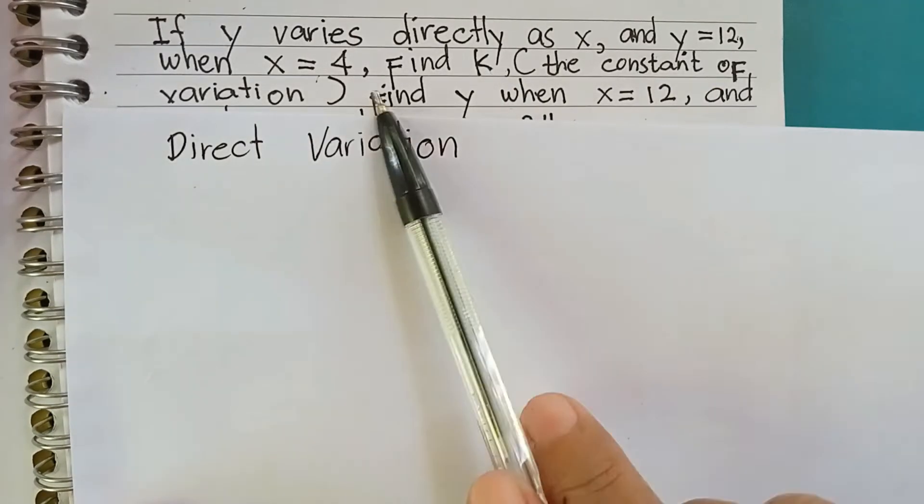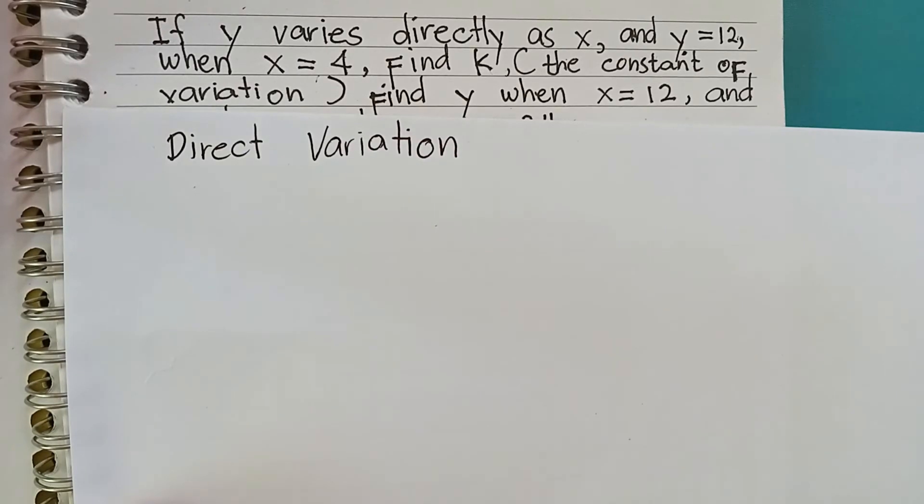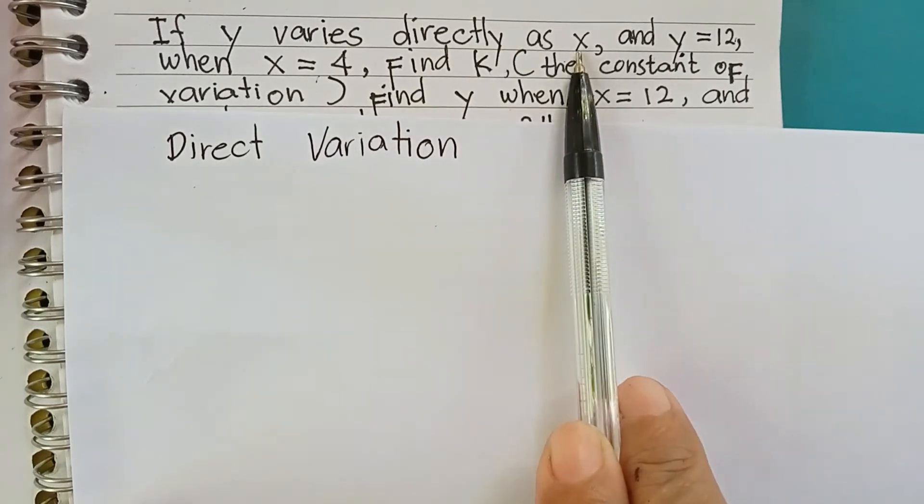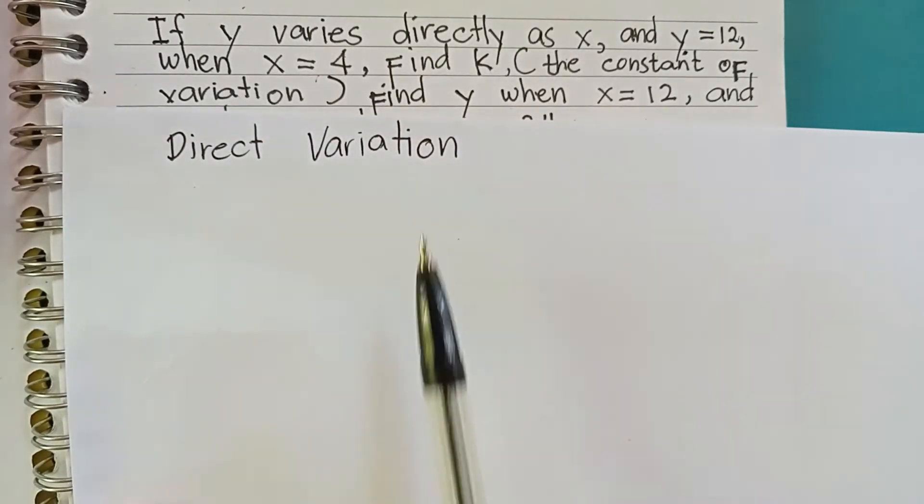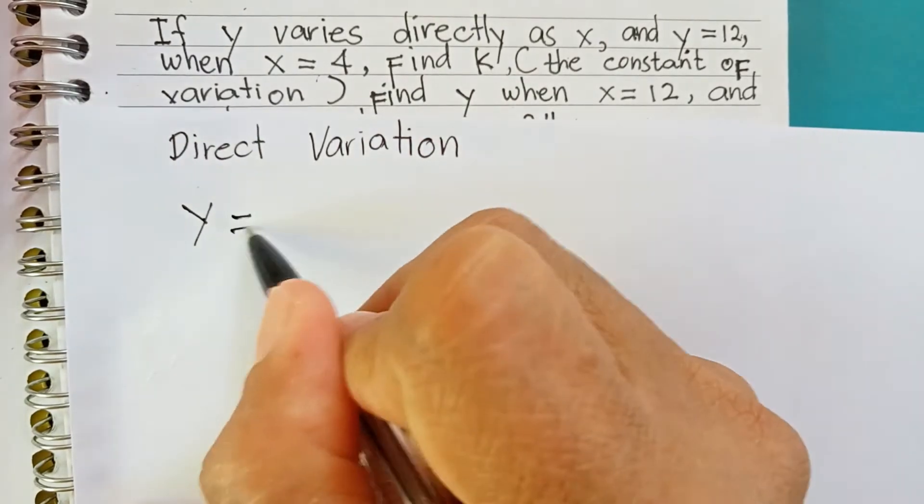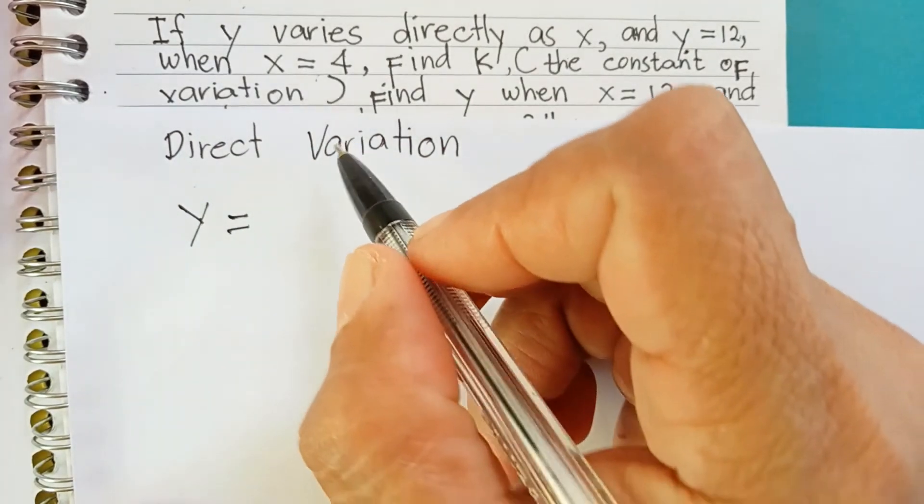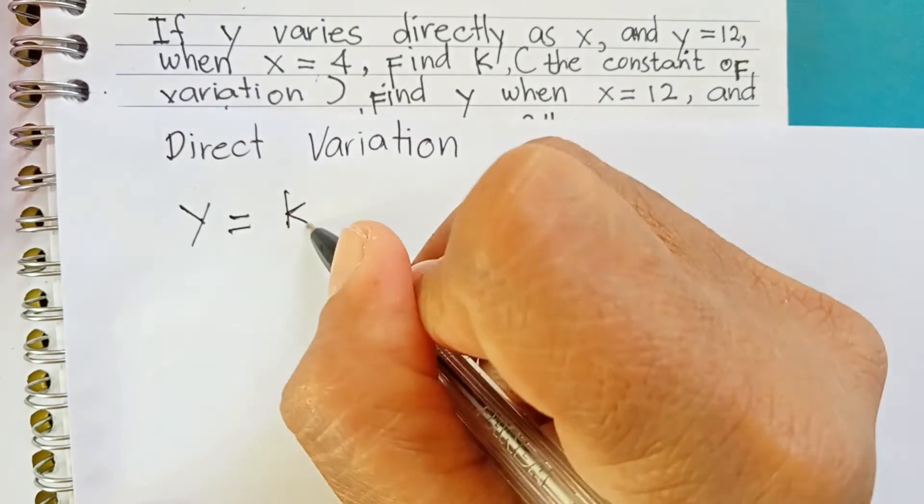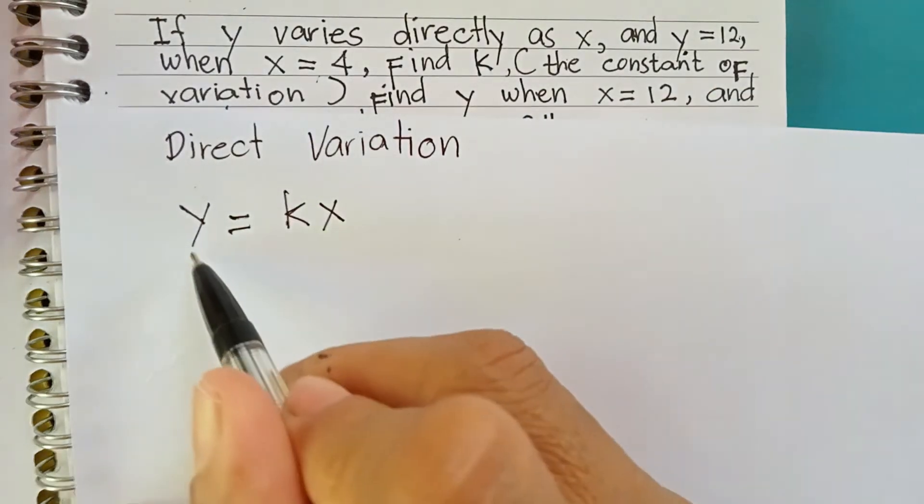So, what is the formula na gamito na ito? Since y varies directly as x, direct variation man siya, the formula is y equals k times x or kx.